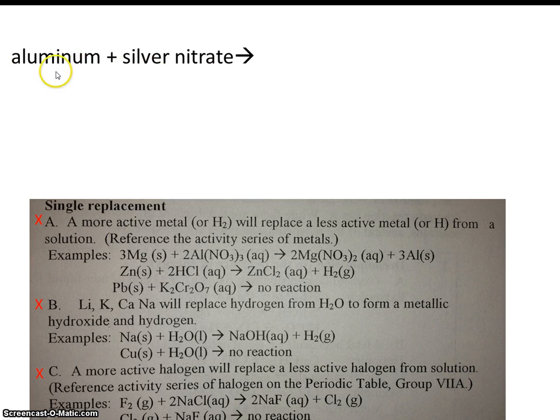So which of the three are we dealing with here? Do we have lithium, potassium, calcium, or sodium? No. Do we have any halogens? Remember, the halogens are fluorine, chlorine, bromine, and iodine. No, we don't have any halogens, but we do have a metal. We have aluminum and silver. So it looks like we're dealing with this first example.